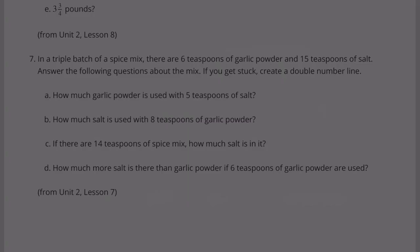Number 7. In a triple batch of spice mix, there are 6 teaspoons of garlic powder, 15 teaspoons of salt. So this is a triple batch. Answer the following questions about the mix. If you get stuck, create a double number line.